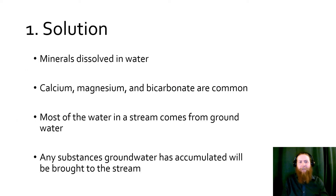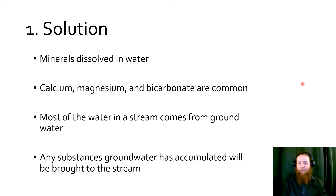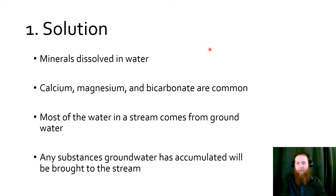Solution involves minerals dissolved in water. Things like calcium, magnesium, and bicarbonate are very common ions to be carried in solution — ions being charged particles. Most of the water coming in a stream from groundwater will keep any substances dissolved inside that groundwater with it. So if plants have leached nutrients from soil and it has made it into the groundwater, that groundwater then carries calcium, magnesium, and bicarbonate with it down the river.